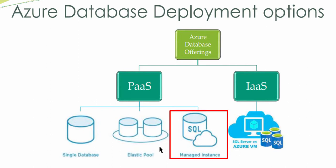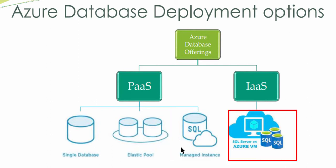The last one under PaaS is the Managed Instance, which is useful when we migrate an on-premise SQL Server to the Azure Database Server. And the last one is SQL Server on Virtual Machine — first we need to purchase an Azure Virtual Machine, then install SQL Server in that Virtual Machine.